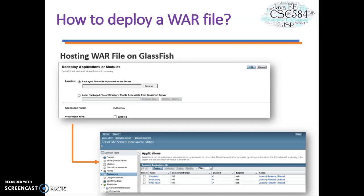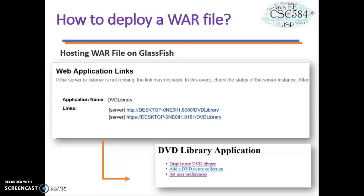There are many options on this page, but we will not change any of them for now. After choosing the WAR file and pressing OK, you will be taken back to the application page with a grid showing all your applications. Click on 'Launch' for the application — in this case DVD Library — and you will be taken to the web application page with links where you can access the deployed application.